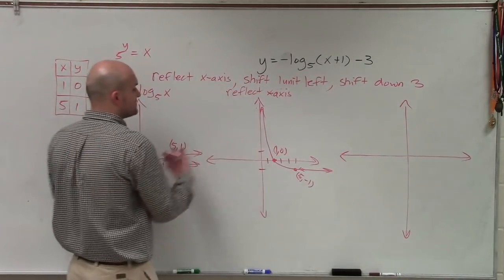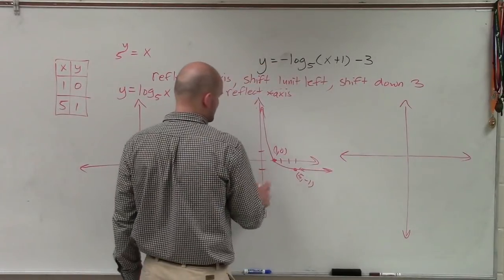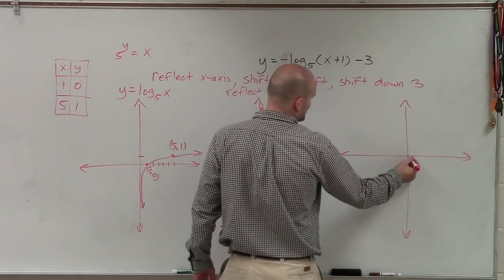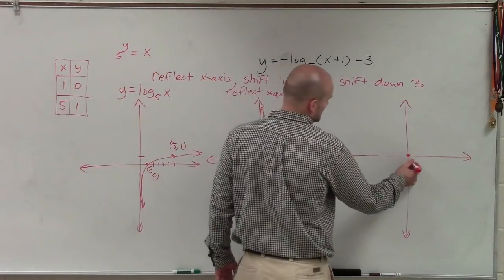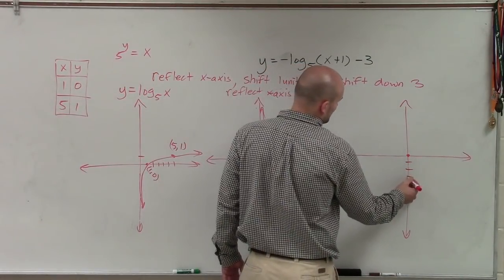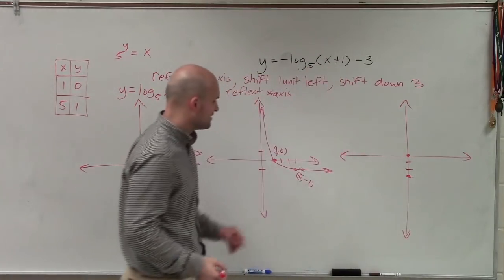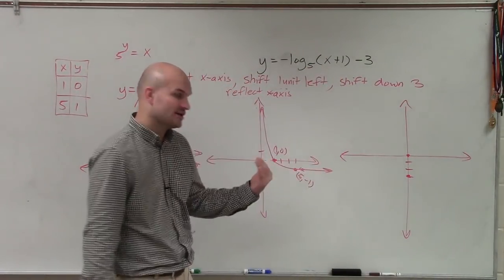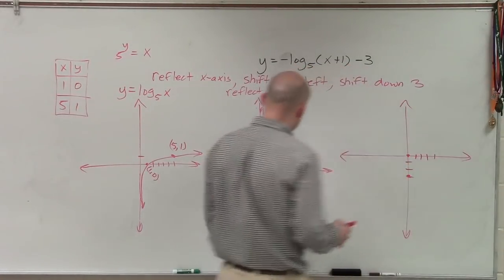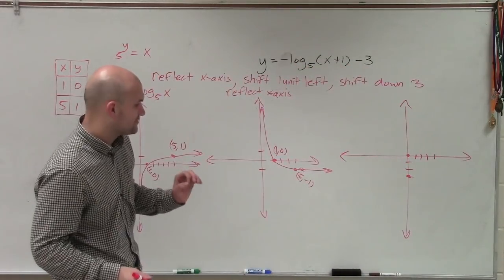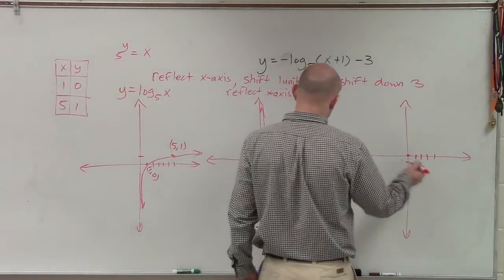So what I'm going to do is I'm going to take these points and I'm going to shift it 1 unit to the left. That's at 1 comma 0. So therefore, now it's going to be at 0 comma 0. And then if I shift it down 3 units, from negative 1, that would now be at negative 4. If I take the point 5, negative 1, I shift it 1 unit to the left. That's now going to be at 4. 1, 2, 3, 4. And then if I shift it down 3 units from negative 1, that would now be at negative 4.